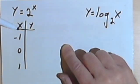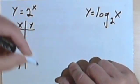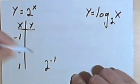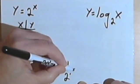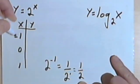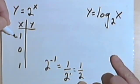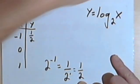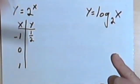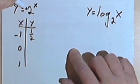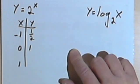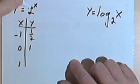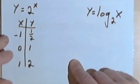So when x equals negative 1, that means I'm raising 2 to the negative 1 power, and that means I'm going to have 1 over 2 to the first power, which is just 1 half. So when x is negative 1, y is going to equal 1 half. When x is 0, since any number to the 0 power is 1, y is going to be 1. And when x is 1, 2 to the first power is going to be 2. So when x is 1, y is 2.